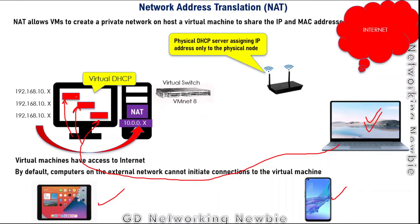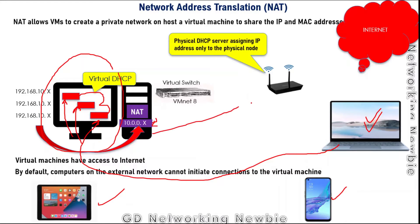These virtual machines can communicate with each other as well. So in NAT, we have a private virtual network, all VMs get IP addresses from the virtual DHCP, and when they want to communicate with the internet, all traffic is translated using the host's IP address. The traffic goes out and comes back, but external nodes cannot initiate communication back to the virtual machines.